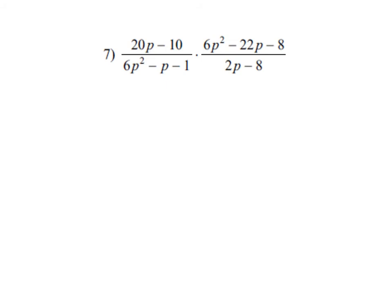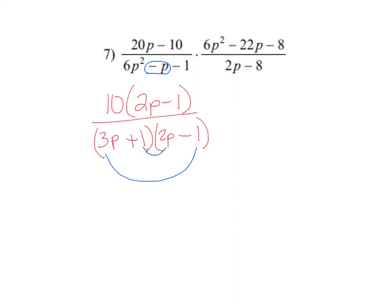Looking at this, when I'm looking at what can I do in the numerator, looks like I'm going to pull out a GCF. Then I'll have 2p minus 1. In the denominator, probably going to be a 3p and a 2p. Definitely going to have to be a 1 and a 1. My outer is going to be a 3p, inner is a 2p, and I'm trying to get a negative 1p. So I'll make my 3 be negative, my 2p be positive. Then that'll end up giving me the middle term that I want.